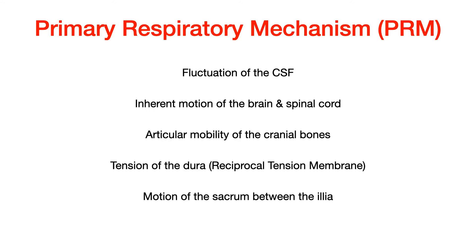Let's begin by talking about the primary respiratory mechanism, also known as the PRM. There are five components of the PRM that you need to memorize for COMLEX: the fluctuation of the cerebrospinal fluid, the inherent motion of the brain and spinal cord, the articular mobility of the cranial bones, the tension of the dura (referred to as the reciprocal tension membrane), and the motion of the sacrum between the ilia.